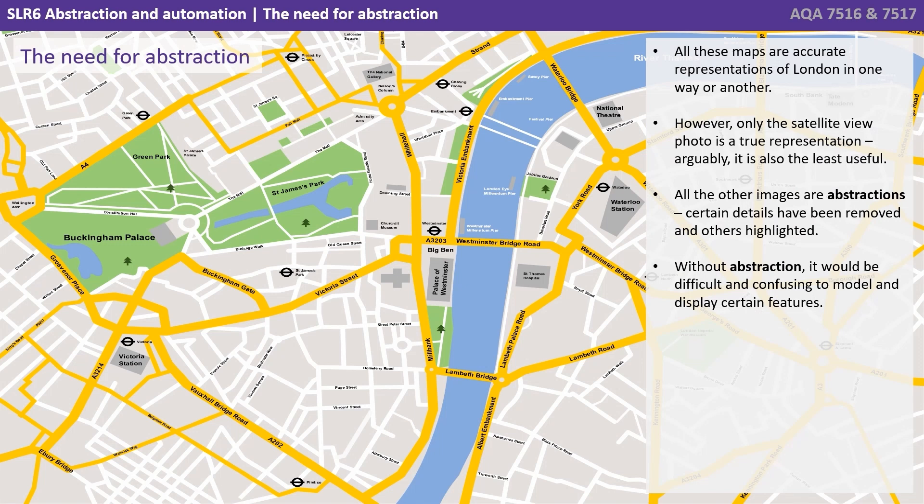All these maps are accurate representations of London in one way or another. However, only the satellite view photo is a true representation, but arguably it's also the least useful. All the other images are abstractions — certain details have been removed and others highlighted. Without abstraction, it would be difficult and confusing to model and display certain features.